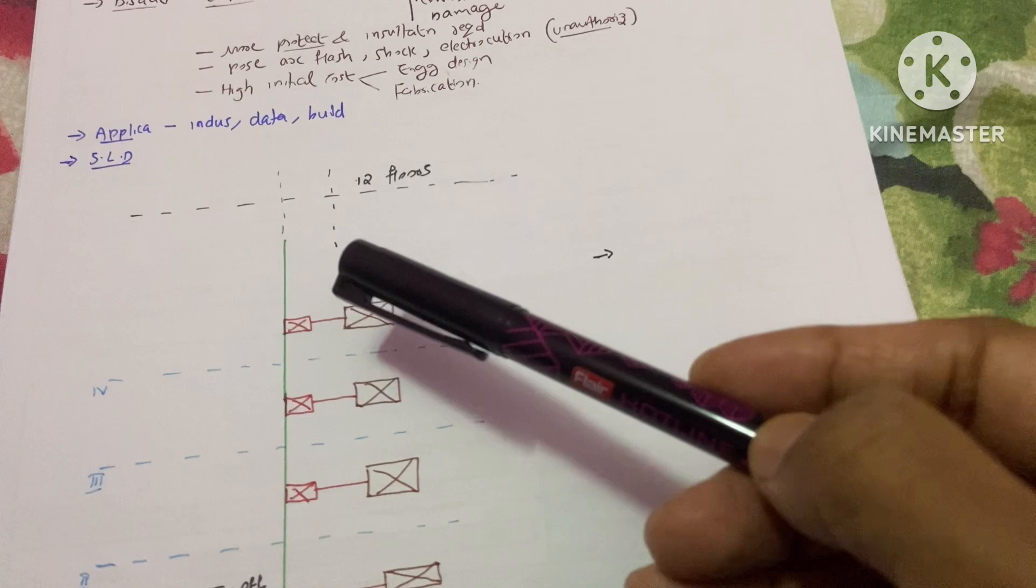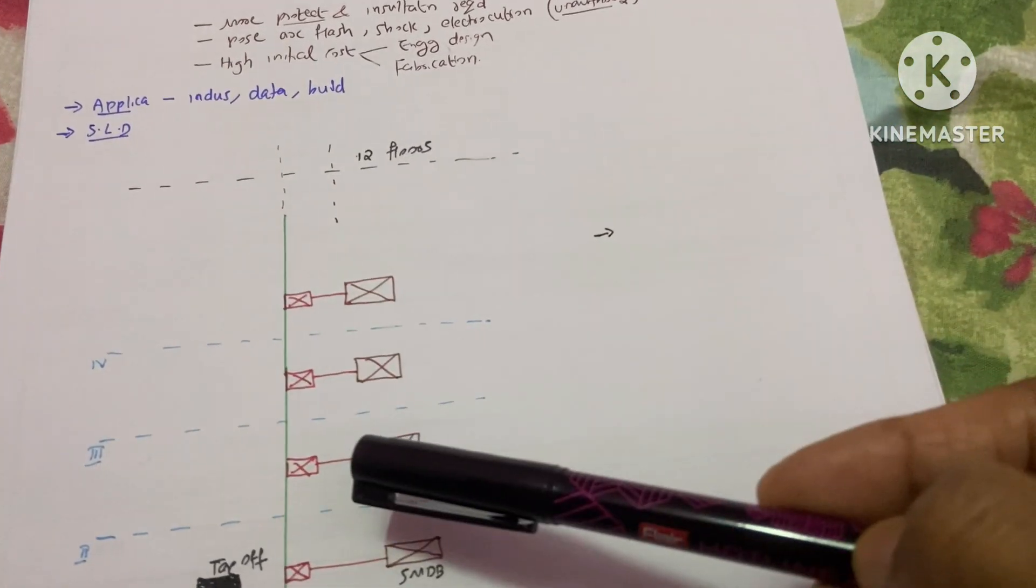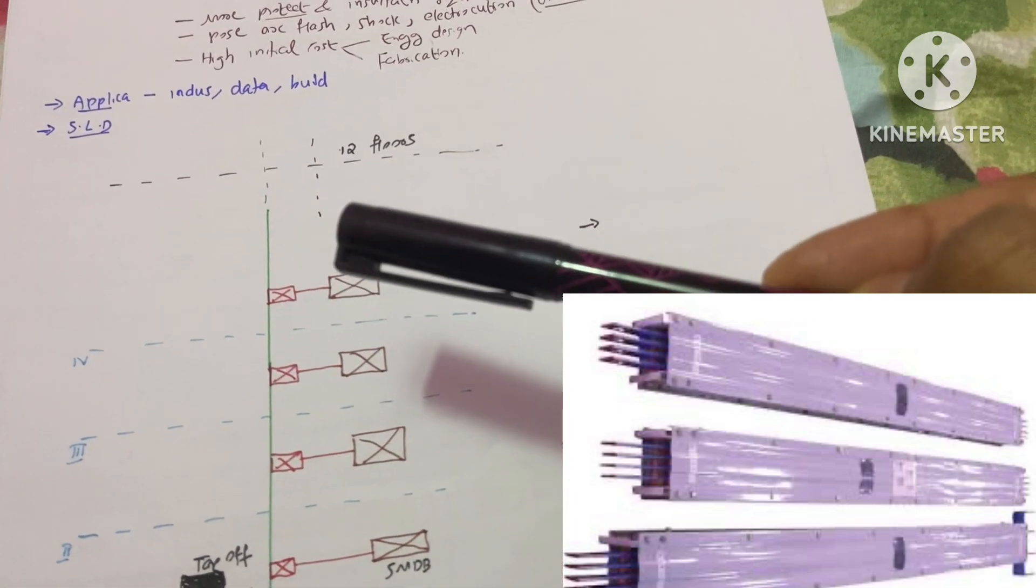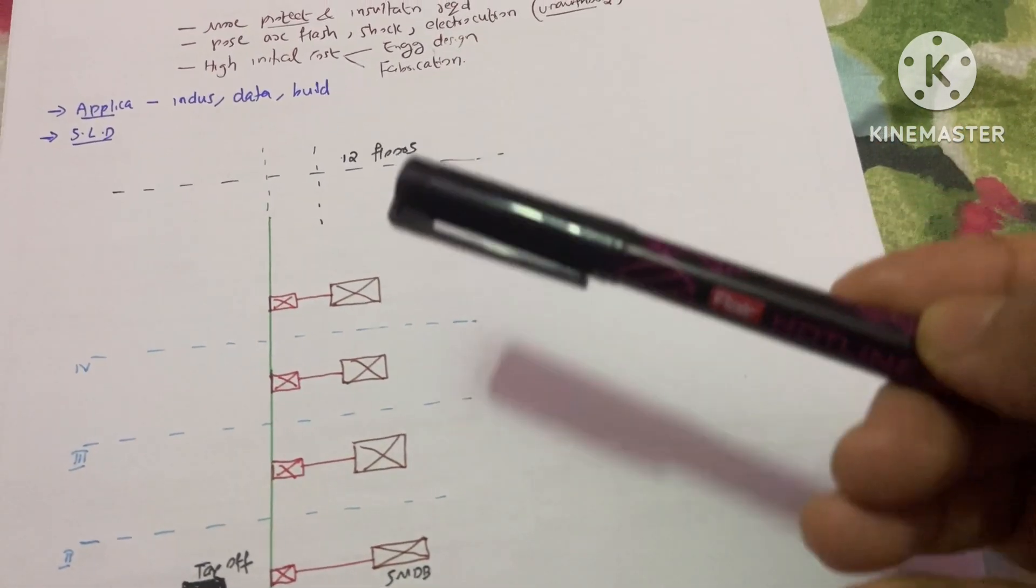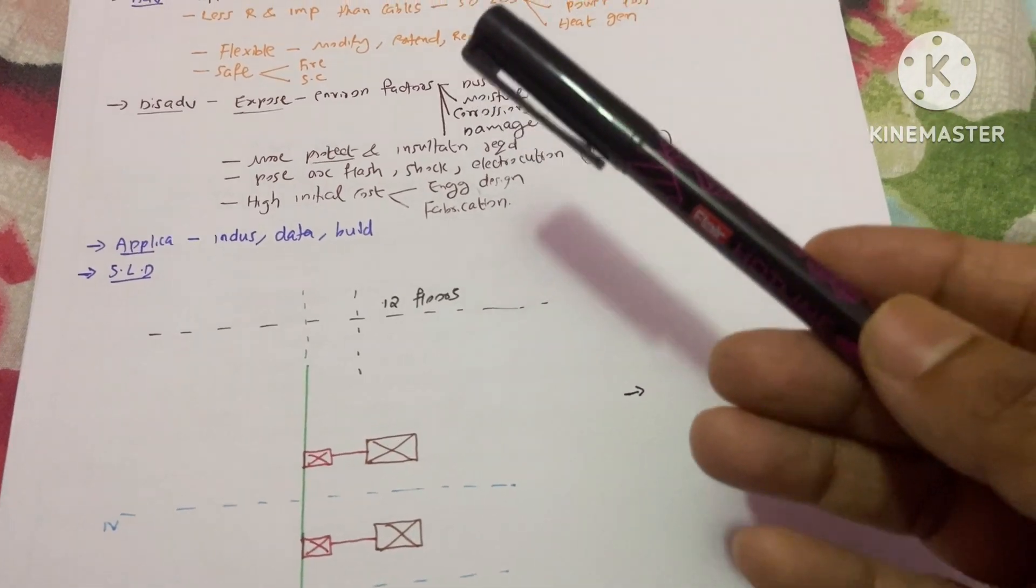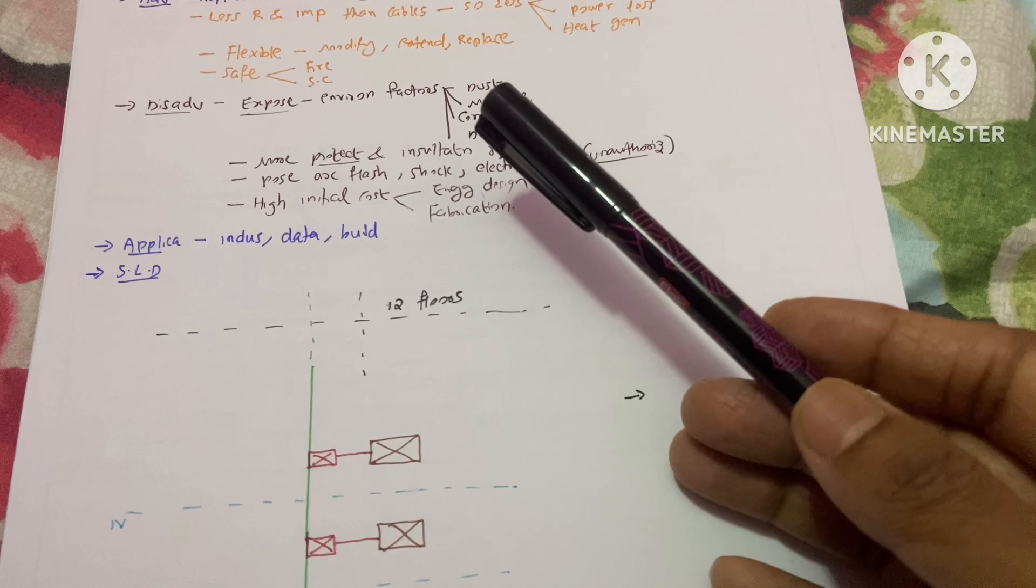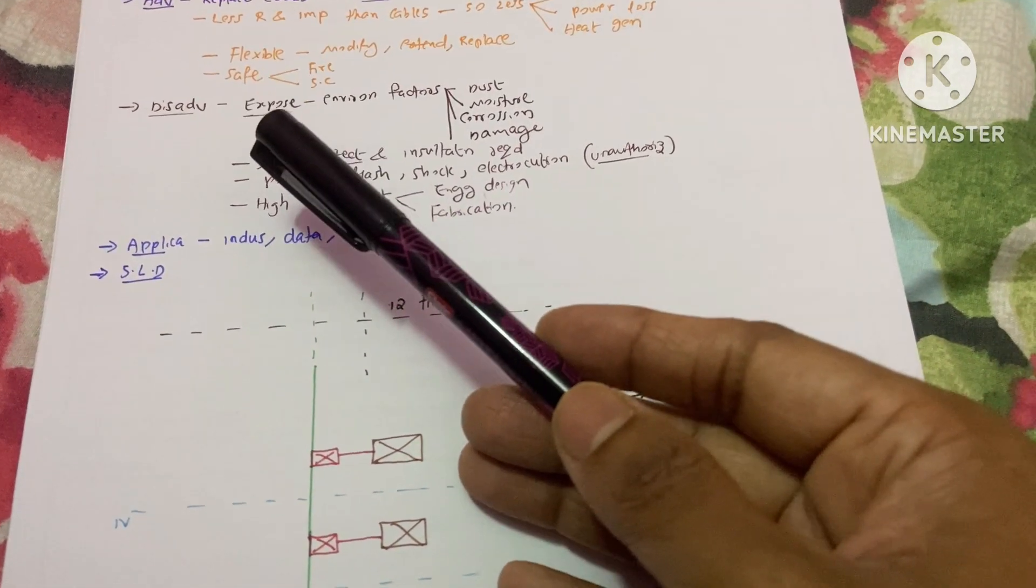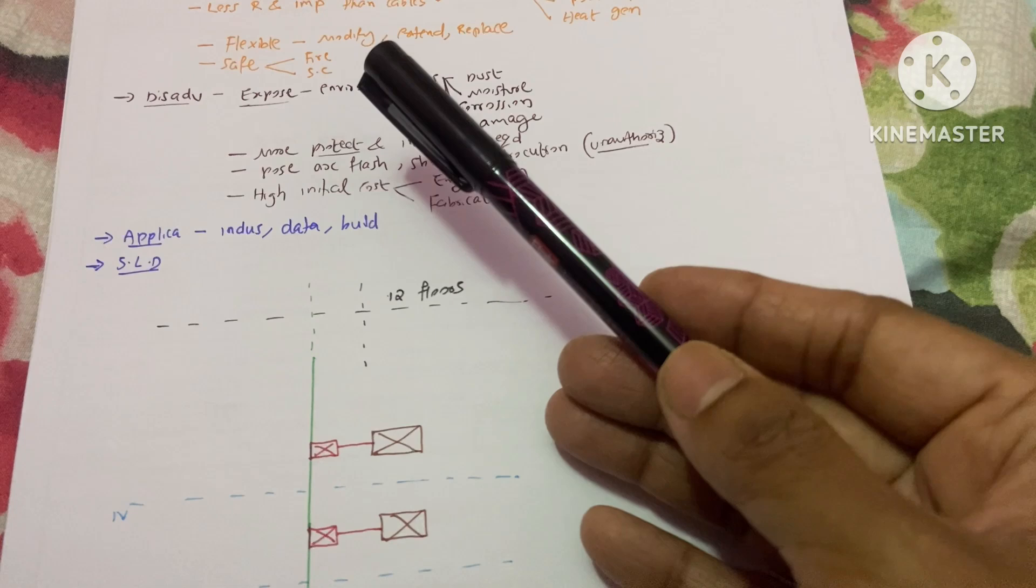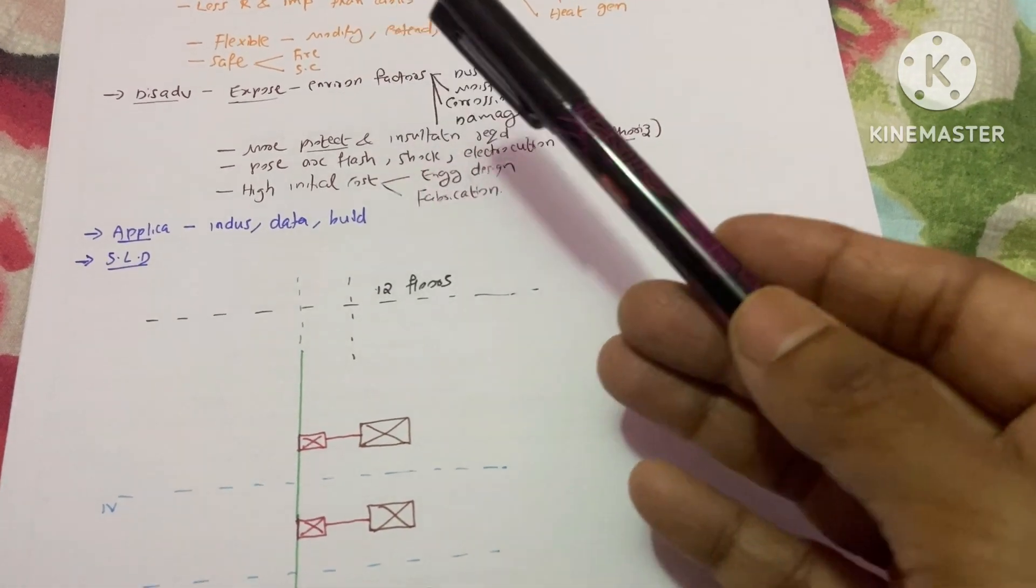This bus bar trunking system doesn't come as a single piece—it comes piece by piece. Each piece is three meters in length. So if there is any damage, you can easily replace it with a new one. The next advantage is safety. The fire hazards and short circuit problems in the trunking system are much less when compared to cables.